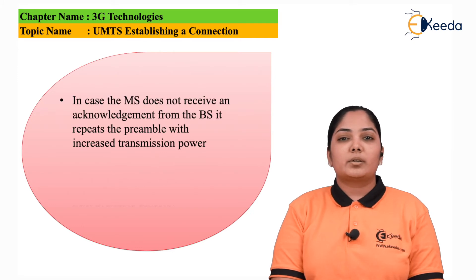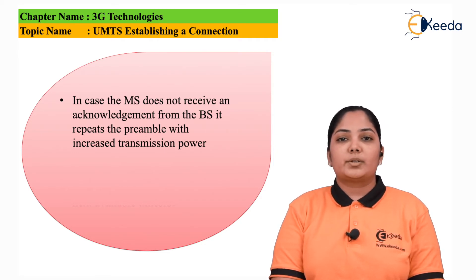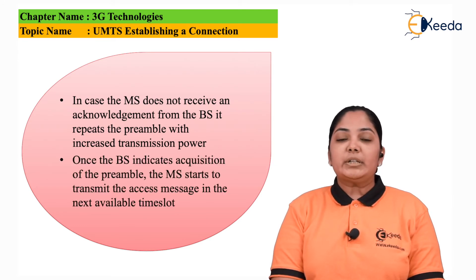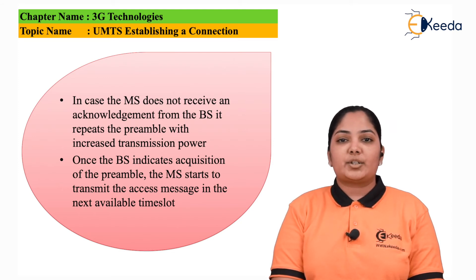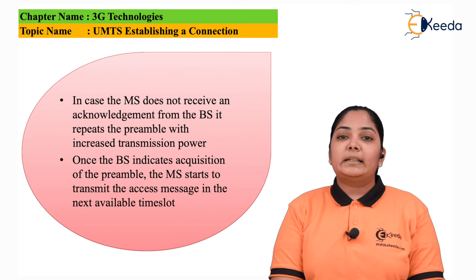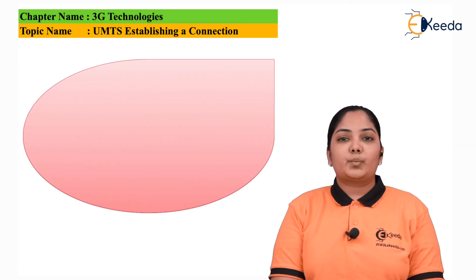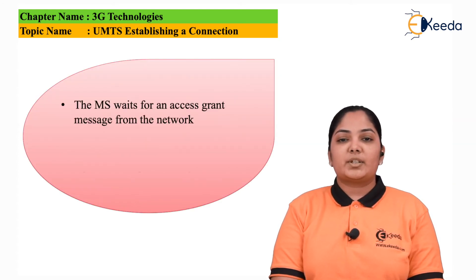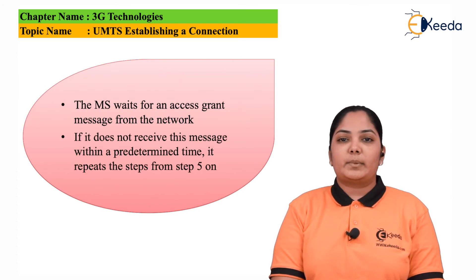If the mobile station does not receive an acknowledgement from the base station, it will repeat the preamble with increased transmission power, assuming the preamble did not reach the base station. Once the base station indicates acquisition of the preamble — i.e., once it confirms it has received the preamble — the mobile station transmits the messages in the next available time slots. The mobile station then waits for an access grant message from the network. If it does not receive this within the pre-determined time duration, it will repeat all the earlier steps.